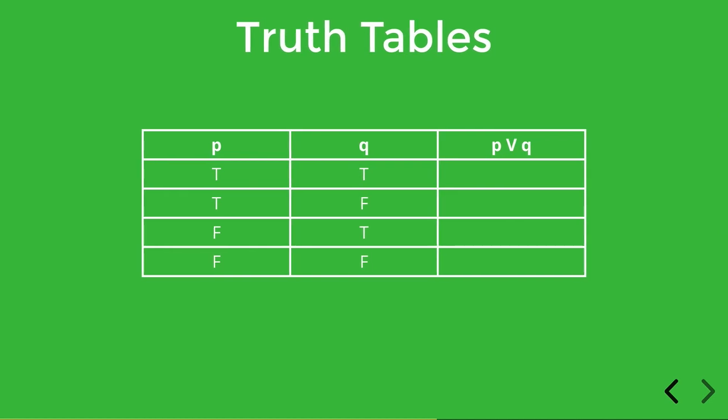Let's look at another example just for illustration. So here we have a truth table with a disjunction, so we have to fill in the final column. So what do we do in the first row?